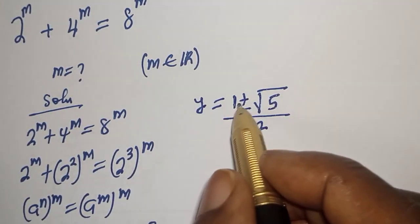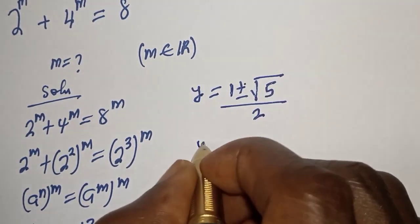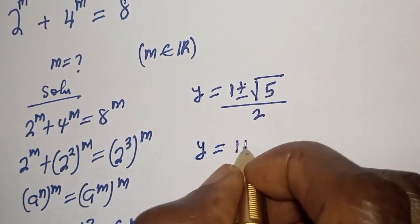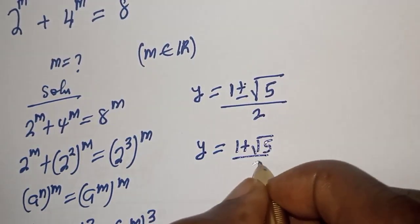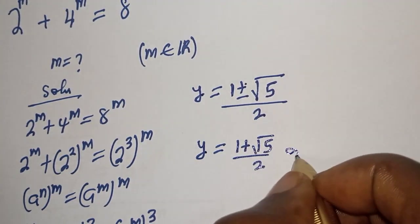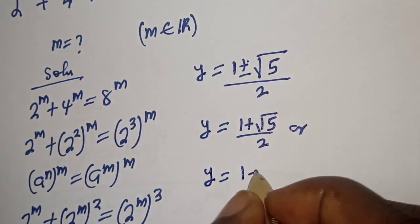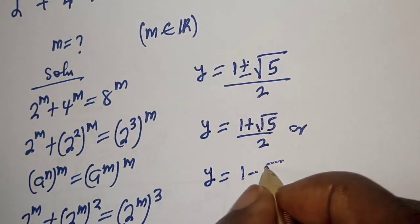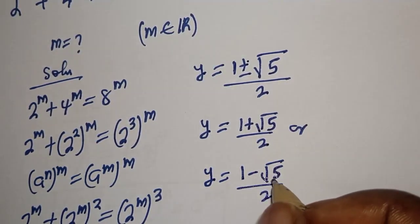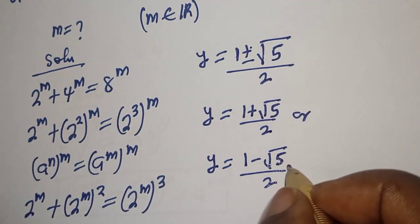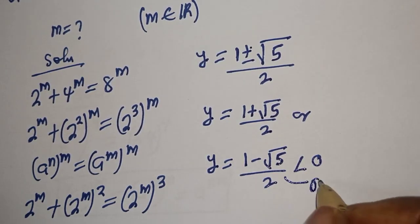So y equals 1 plus or minus square root of 5, over 2. Then y equals 1 plus square root of 5 over 2, or y equals 1 minus square root of 5 over 2. But this second solution is less than 0, so the whole of this is rejected.